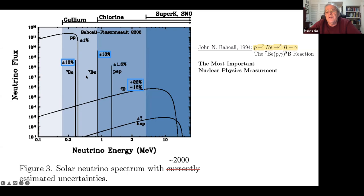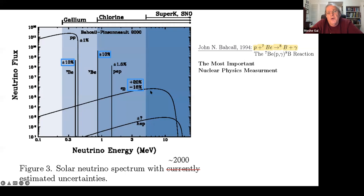John Bacall put together the entire reaction network and calculated the neutrino spectrum. There is the PP neutrino, the beryllium-7 neutrino. We will concentrate on the boron-8 solar neutrino, which was measured in Super-Kamiokande, Yoconda, and SNO. The boron-8 neutrinos go up to about 15 and 17 MeV, with a detection threshold of about 5 MeV.